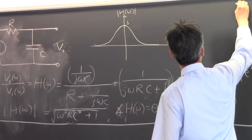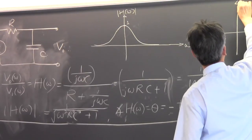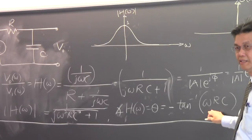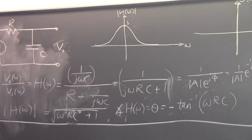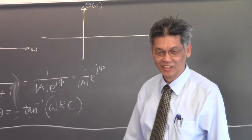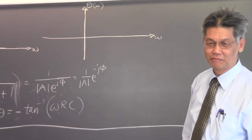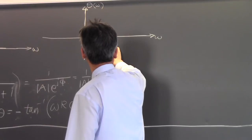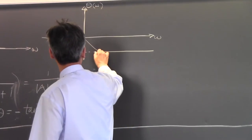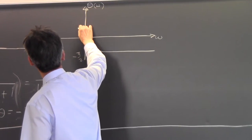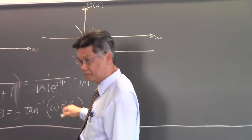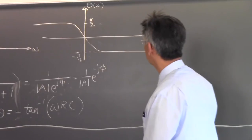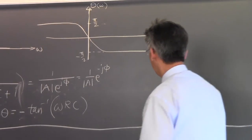What about the angle? If we plot the phase as a function of frequency, when omega is positive we get arctangent of a big number, which is π/2, but with a negative sign. So when omega is very large, the angle is minus π/2. And as you go to negative omega, this becomes plus π/2 because of this minus sign. So this is called a low-pass filter.